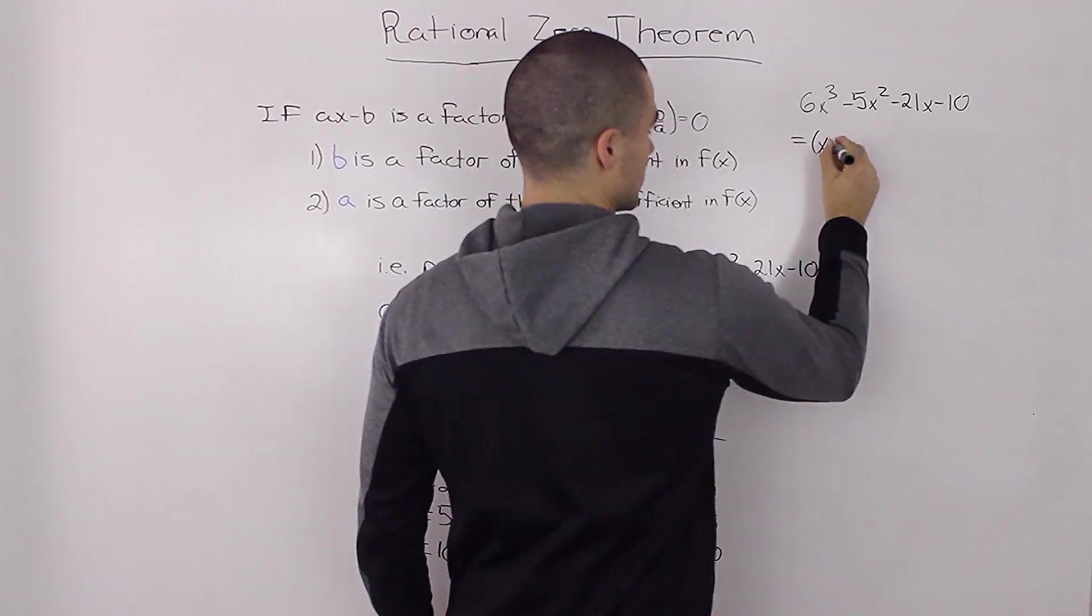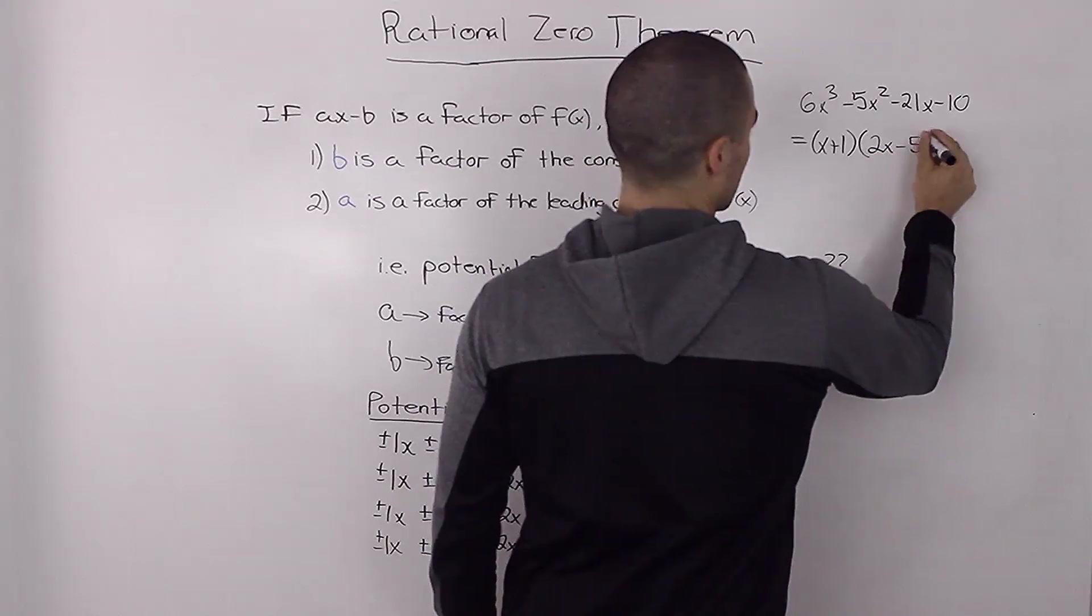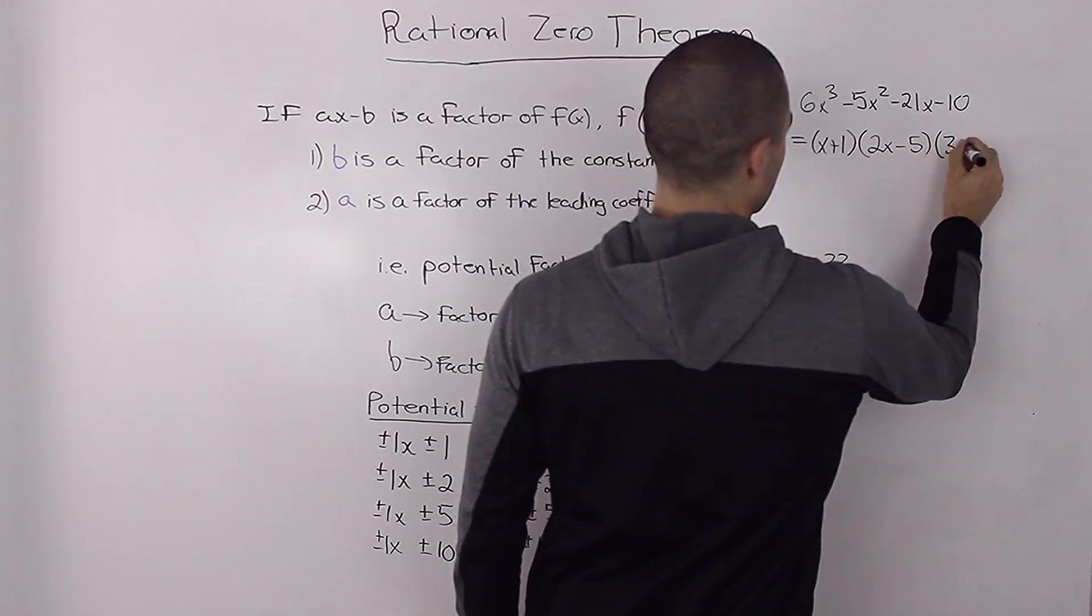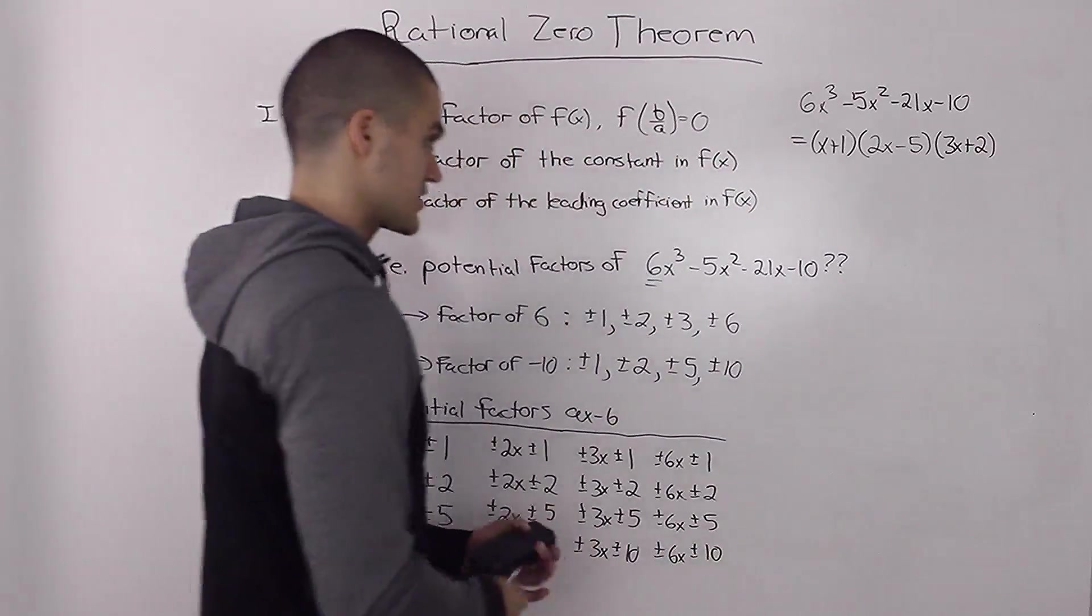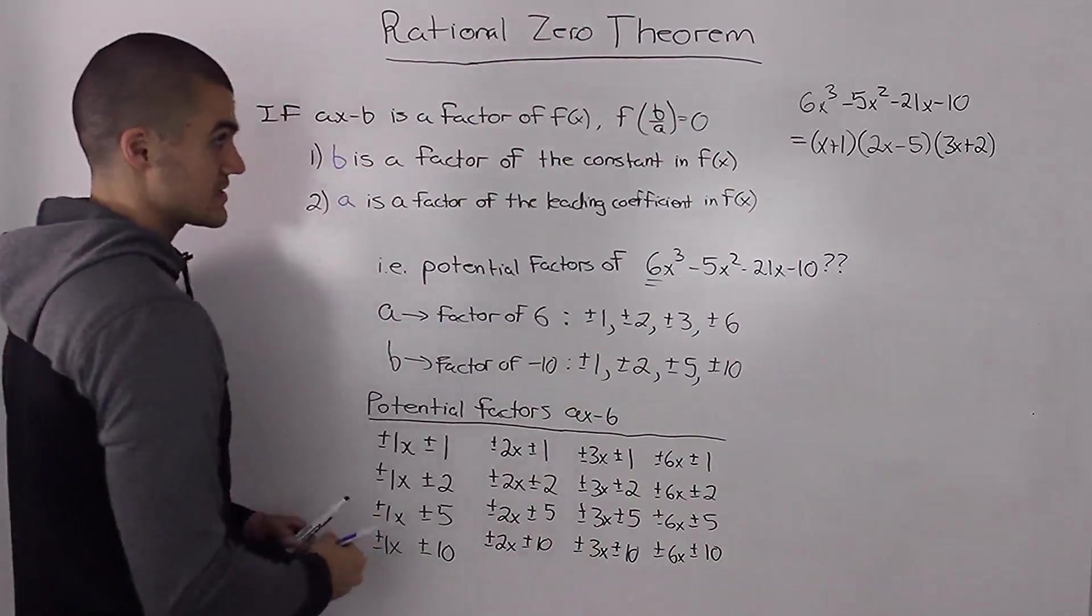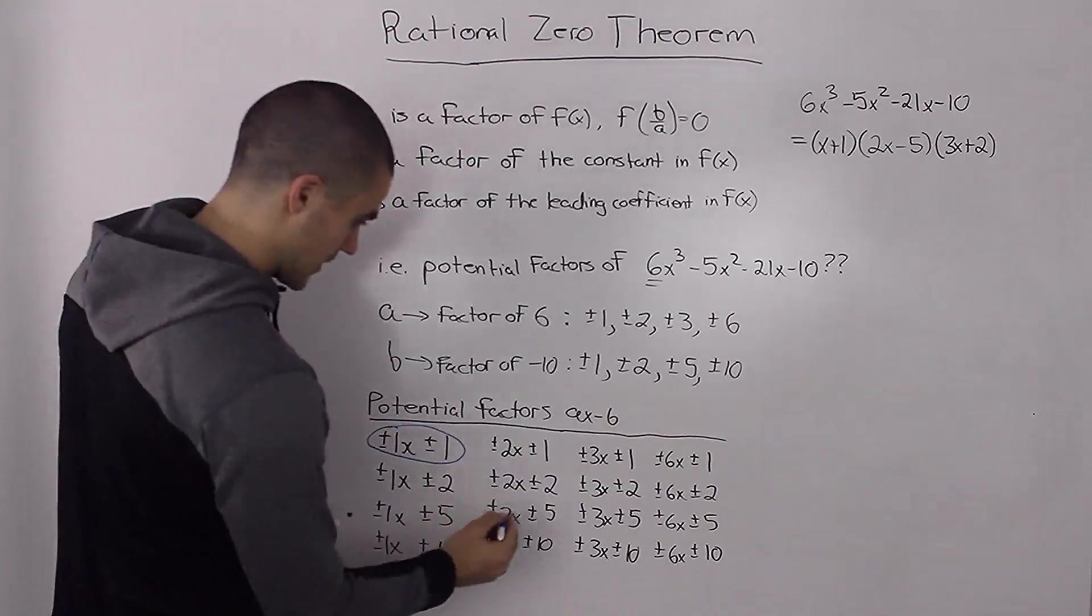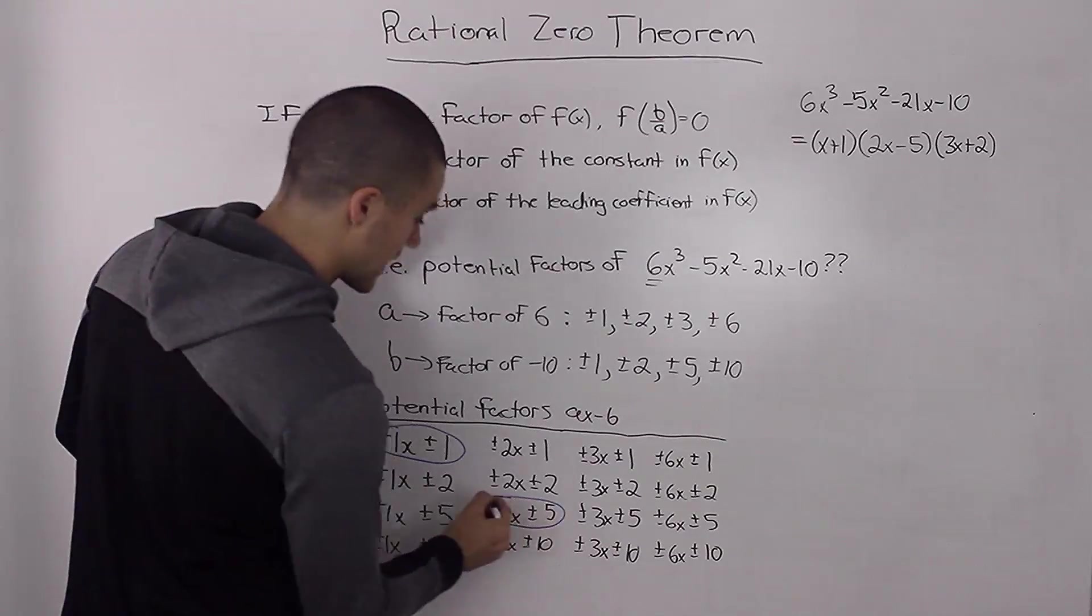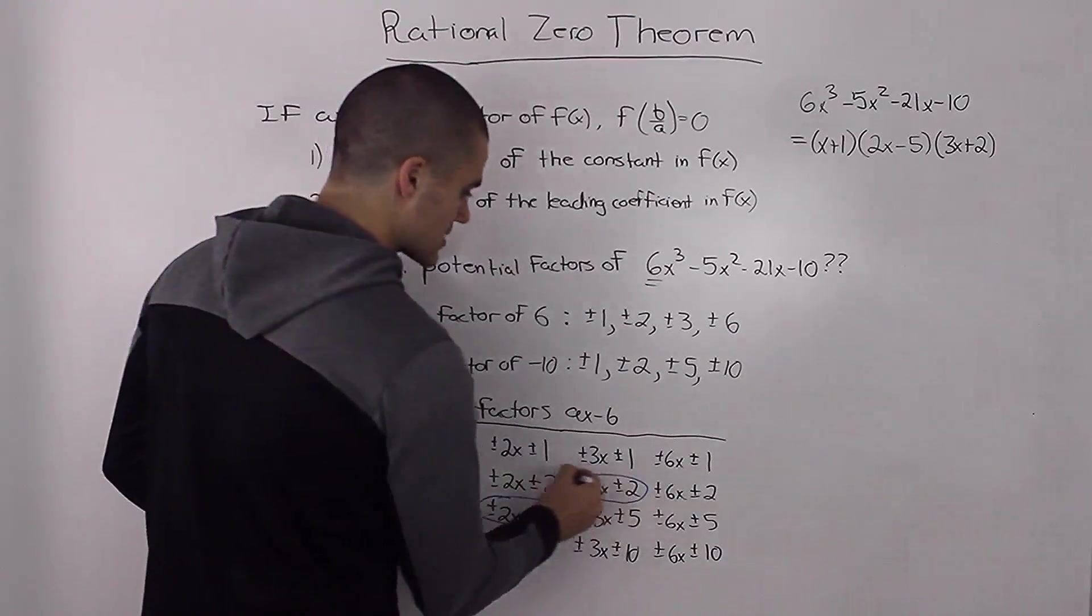In fact, the factors are, if we were to factor this polynomial, it would be (x + 1)(2x - 5)(3x + 2). So out of this whole list here, x + 1 would come from this batch, 2x - 5 would come from this batch, and 3x + 2 would come from this batch.